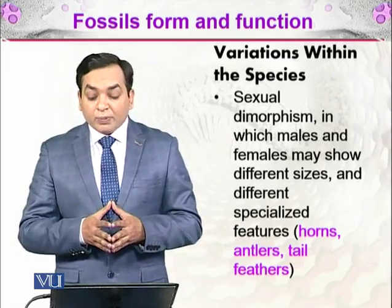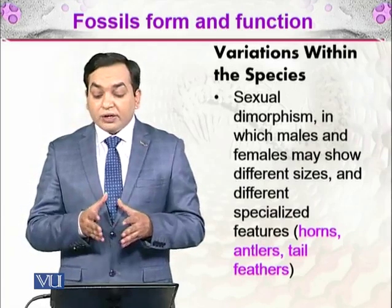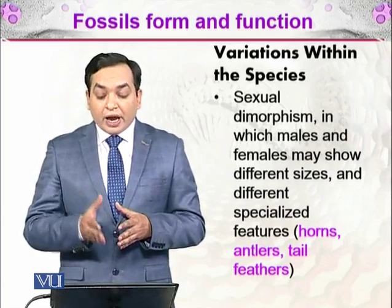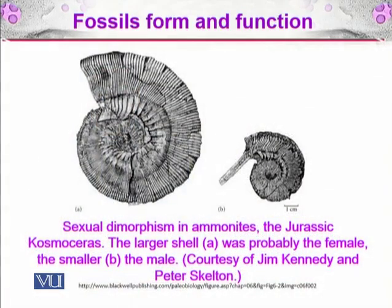Sexual dimorphism means males and females may show different sizes and specialized features such as horns, antlers, and tail feathers. In the diagram shown, shell A is larger and shell B is smaller — illustrating sexual dimorphism in ammonites. In the Jurassic Cosmoceras, photographed by Jim Kennedy and Peter Skelton, the larger shell was probably the female and the smaller the male. This makes sense, as the female must lay eggs and give rise to offspring.